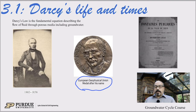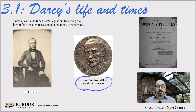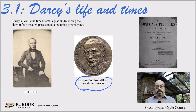On the right hand side here is the cover of his book, "Les Fontaines Publiques de la Ville de Dijon" — the public fountains of the town of Dijon. Dijon is known for two things: their mustard and Darcy and their waterworks. The book was published in 1856, towards the end of his life, and describes the experiments and the science behind the engineering he did to realize the fountains.